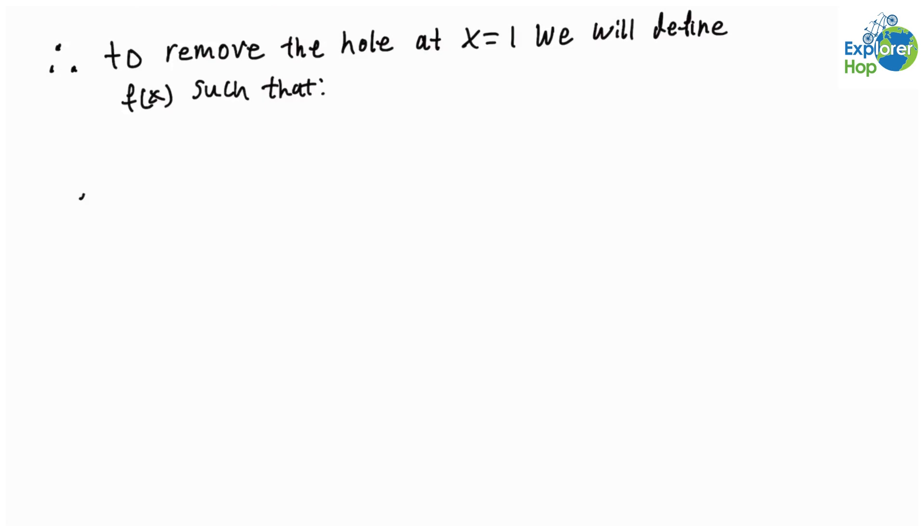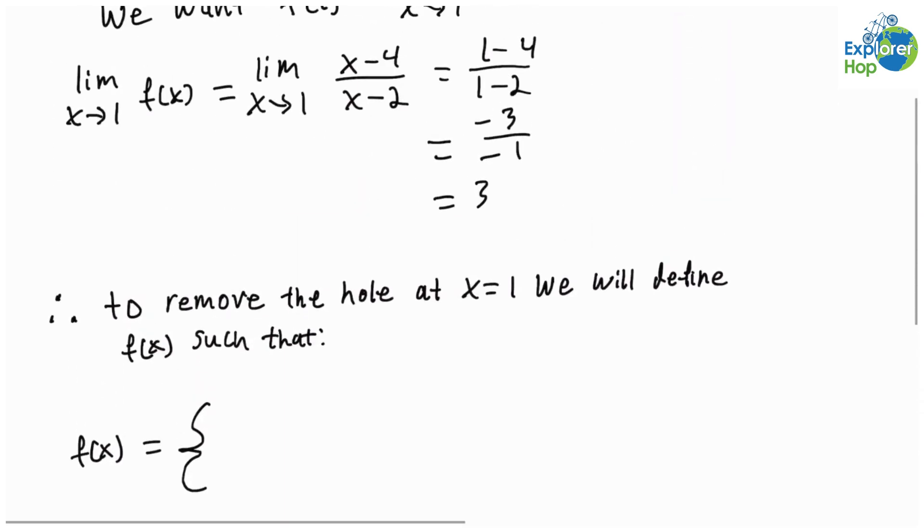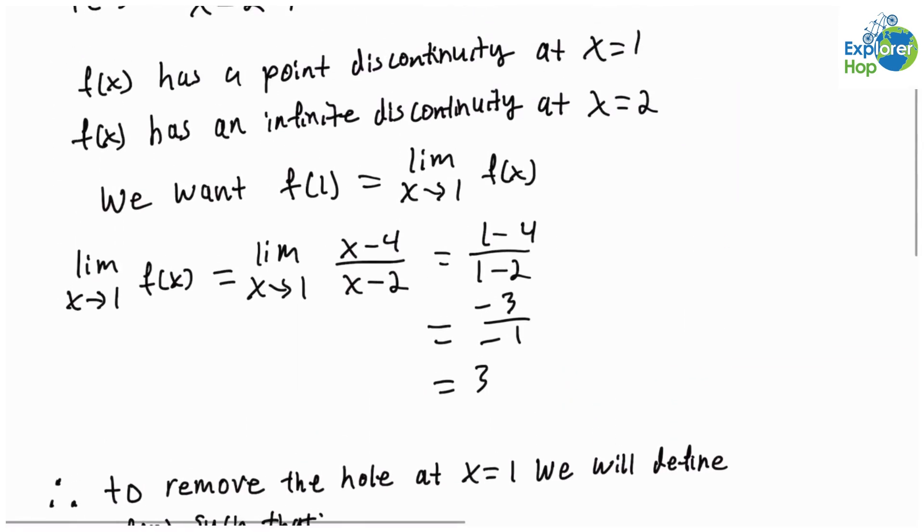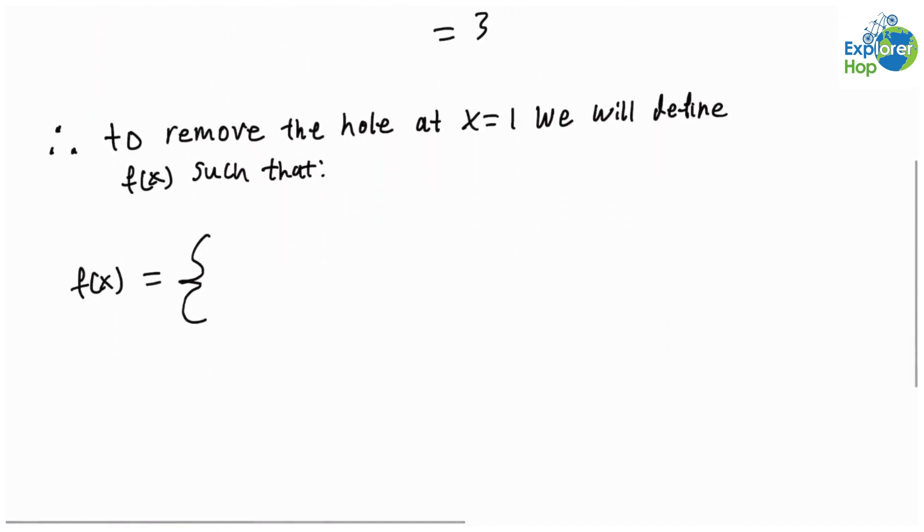f(x) = (x - 4) / (x - 2) if x is not equal to 1 or 2, and 3 if x is equal to 1.